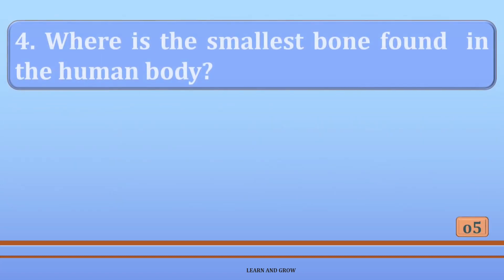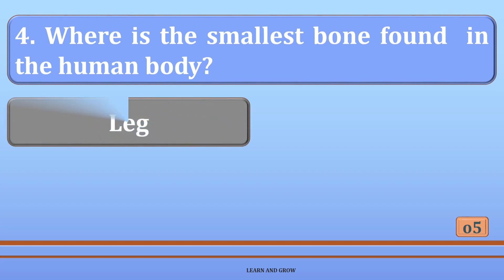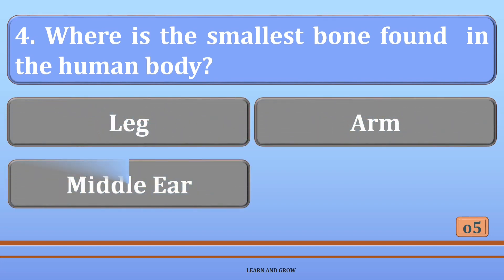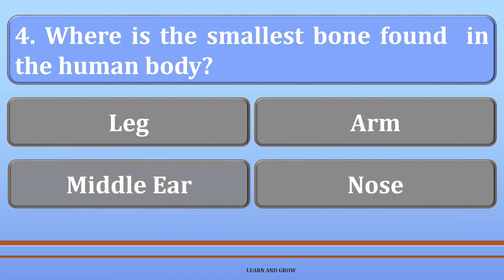Where is the smallest bone found in the human body? Options are: A: leg, B: arm, C: middle ear, or D: nose. The right answer is option C, middle ear.